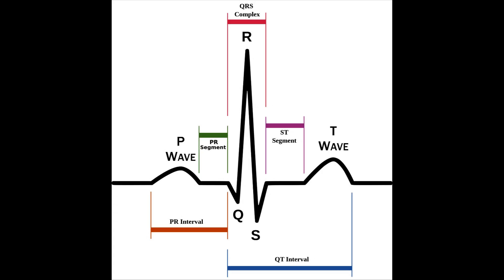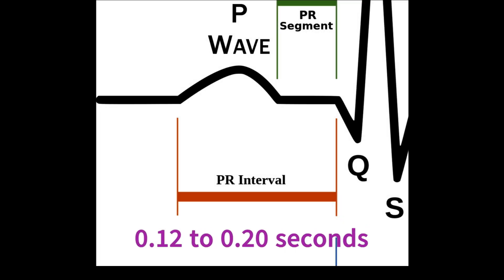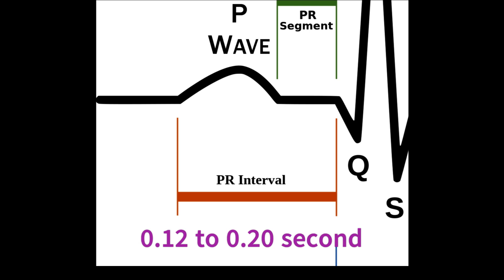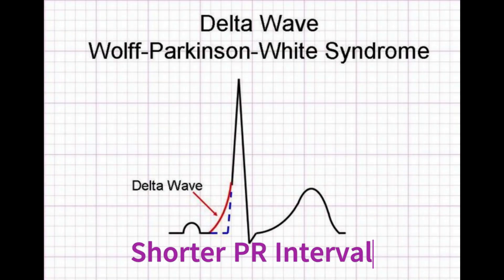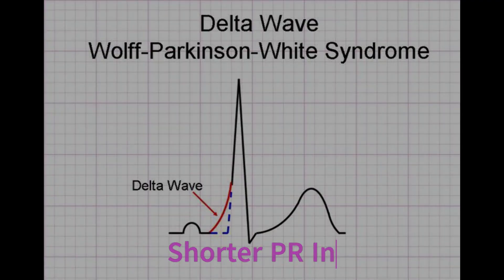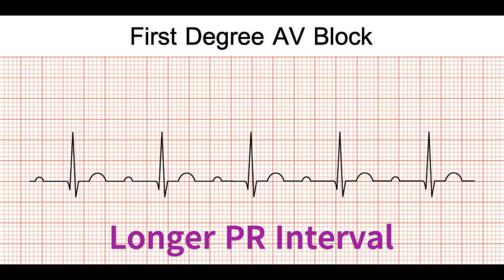The normal range for the PR interval is between 0.12 and 0.20 seconds, or 3 to 5 small squares. A PR interval that is shorter or longer than this range can be an indication of certain heart conditions.